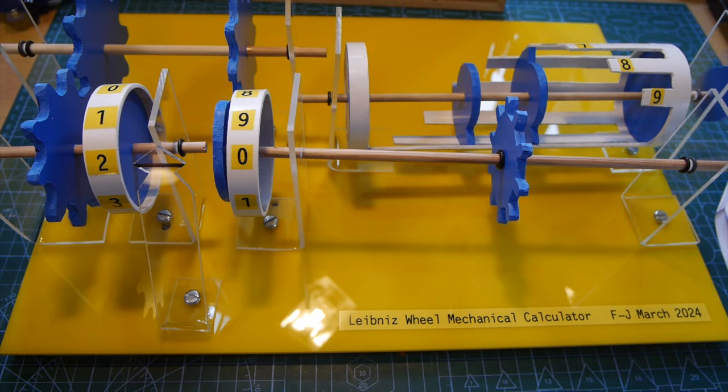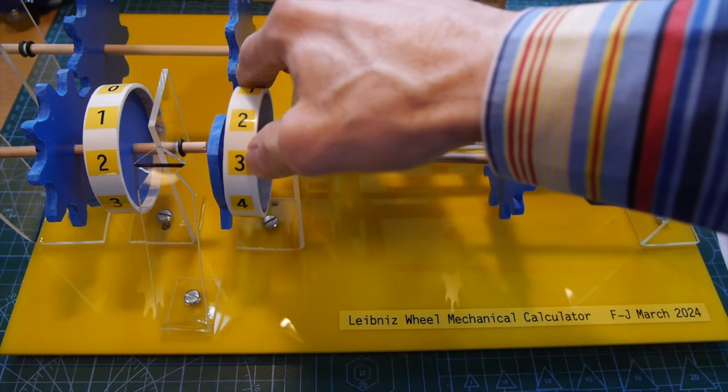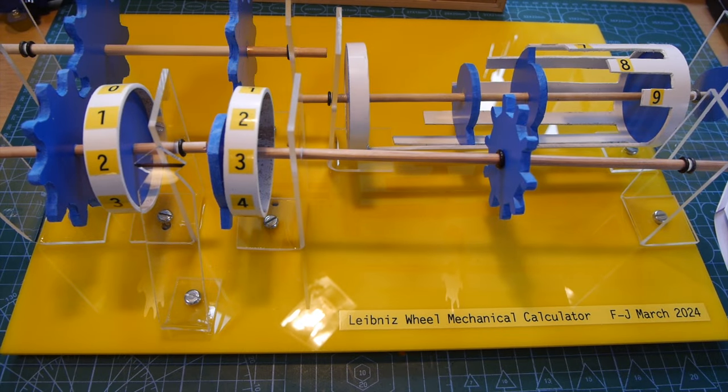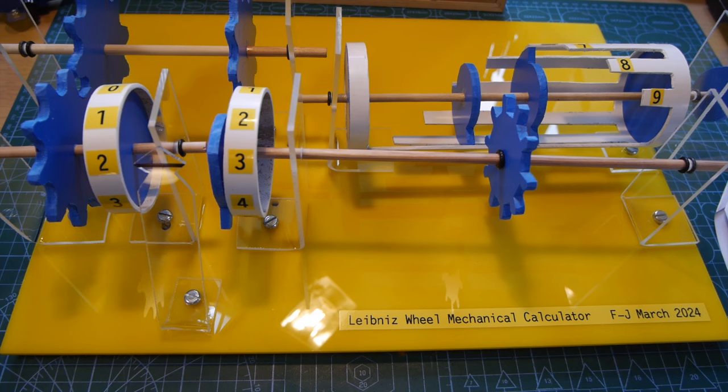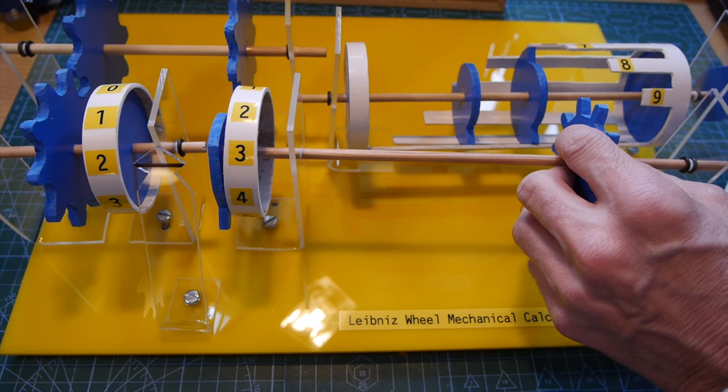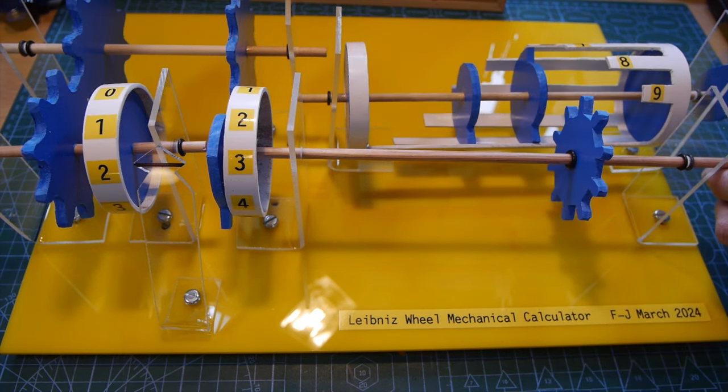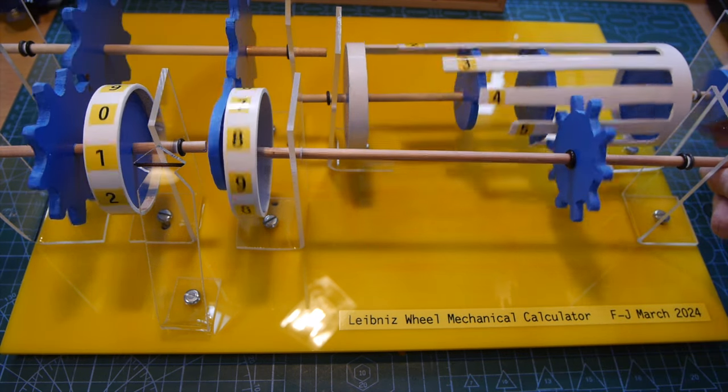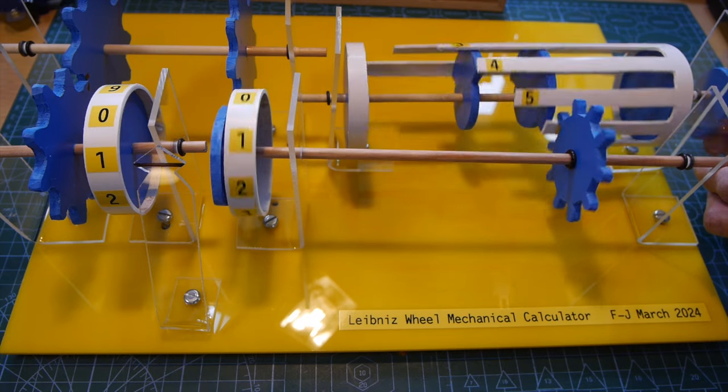Subtraction can be done in a number of ways. For example if we wish to do 23 minus 12 we could enter 23 on the output drums and then subtract 12 from this by moving the counting wheel to the sixth tooth position on the Leibniz wheel and rotating it twice backwards to remove 12 from 23.